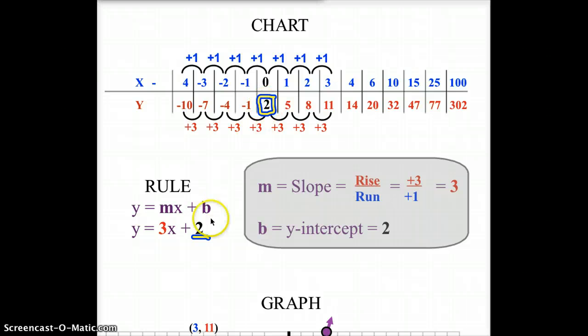So, 2 becomes my y-intercept in this case. So, there's the slope. The 3 over the 1 or the rise over the run. Here's my y-intercept. When x equals 0, that equals 2. And there is my rule.